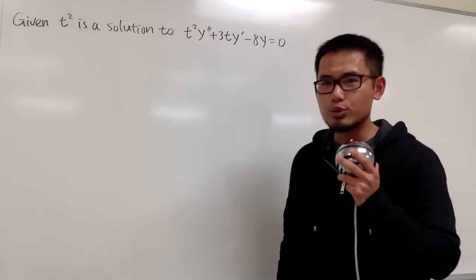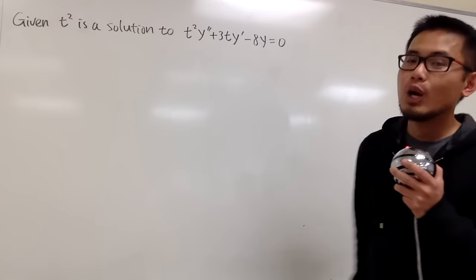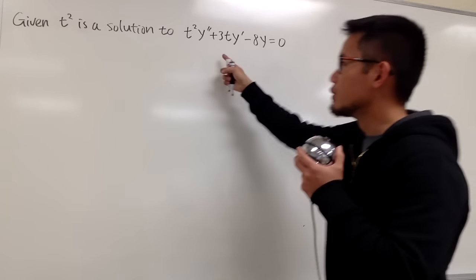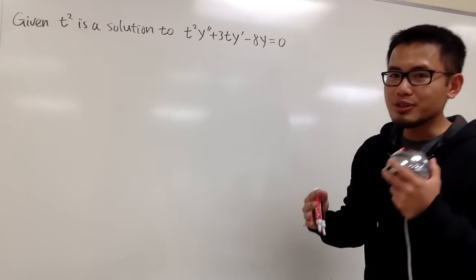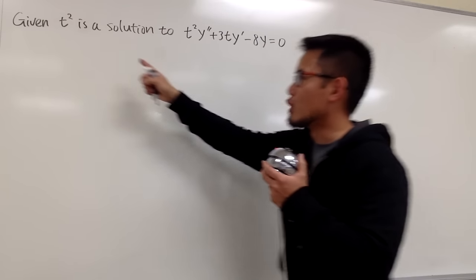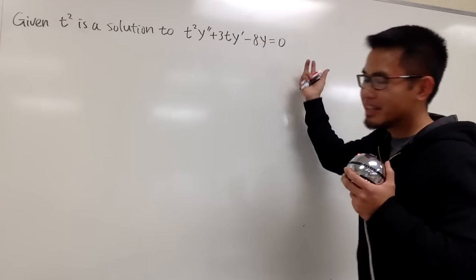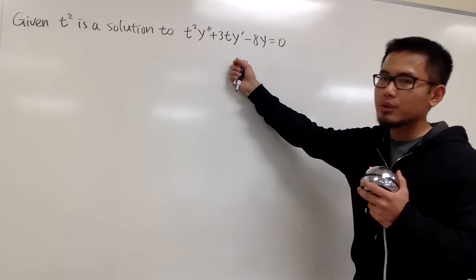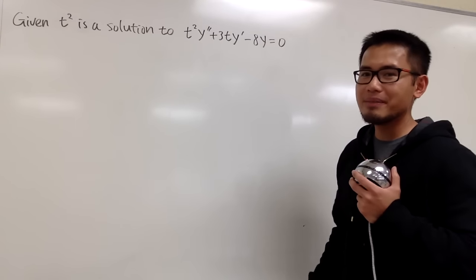I'm going to show you how to use the reduction of order to solve this. We are first given that t squared is a solution to this differential equation, and it should just take a minute or so to verify it yourself. Just derive this twice, plug in, and you will see 0 is equal to 0. So it is, in fact, a solution.